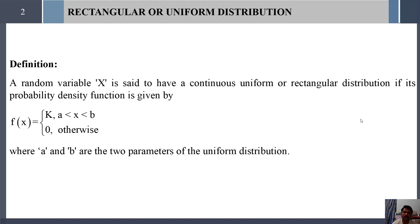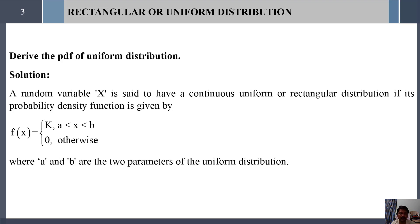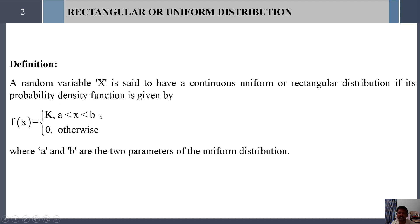A random variable X is said to follow a uniform distribution, or continuous uniform distribution, or rectangular distribution, if its probability density function is f(x) = k, where k is a constant. The value of x should lie between a certain interval, here that interval is a to b. Here a and b are called parameters of the distribution.